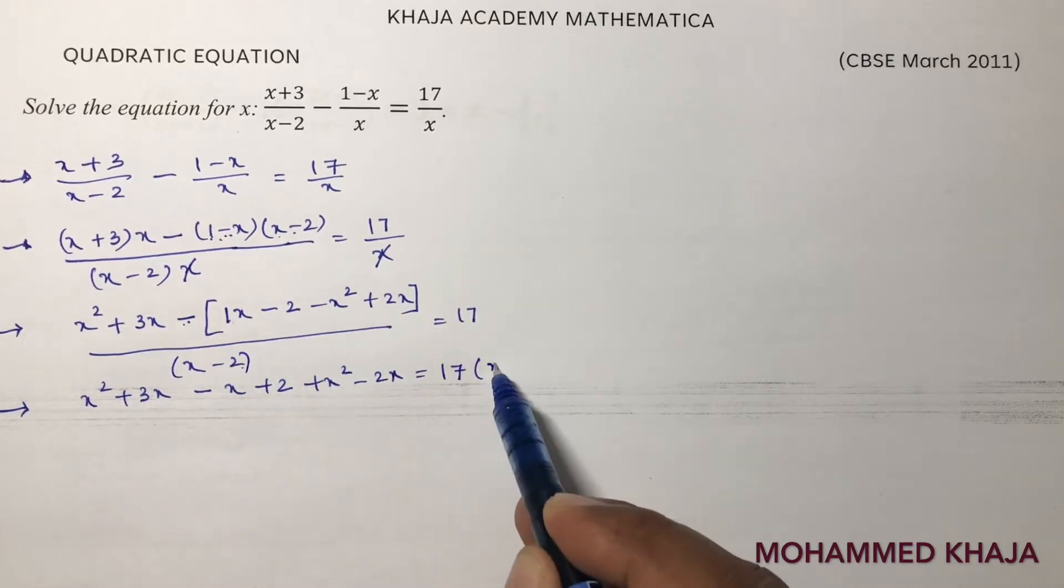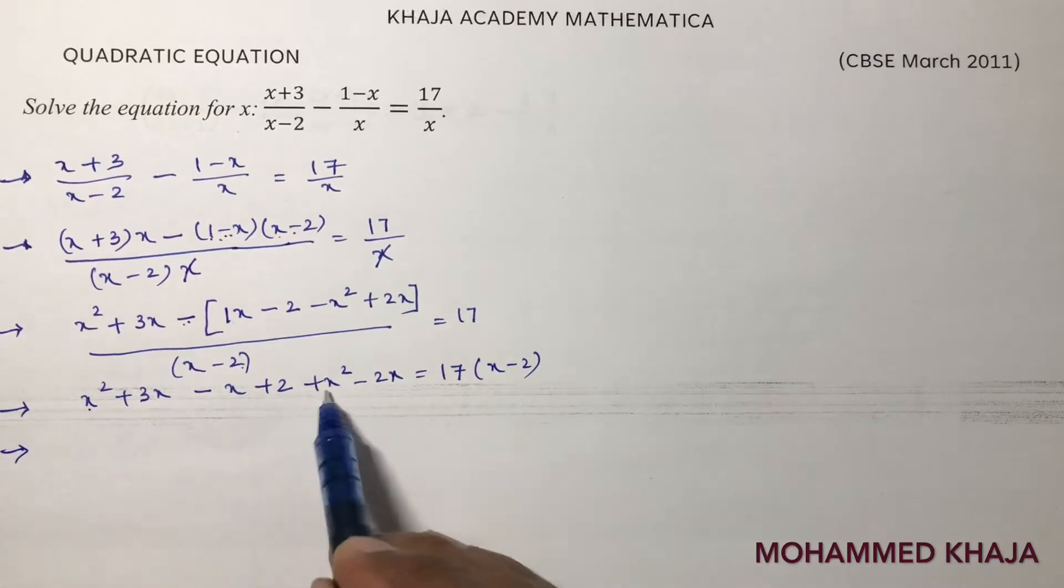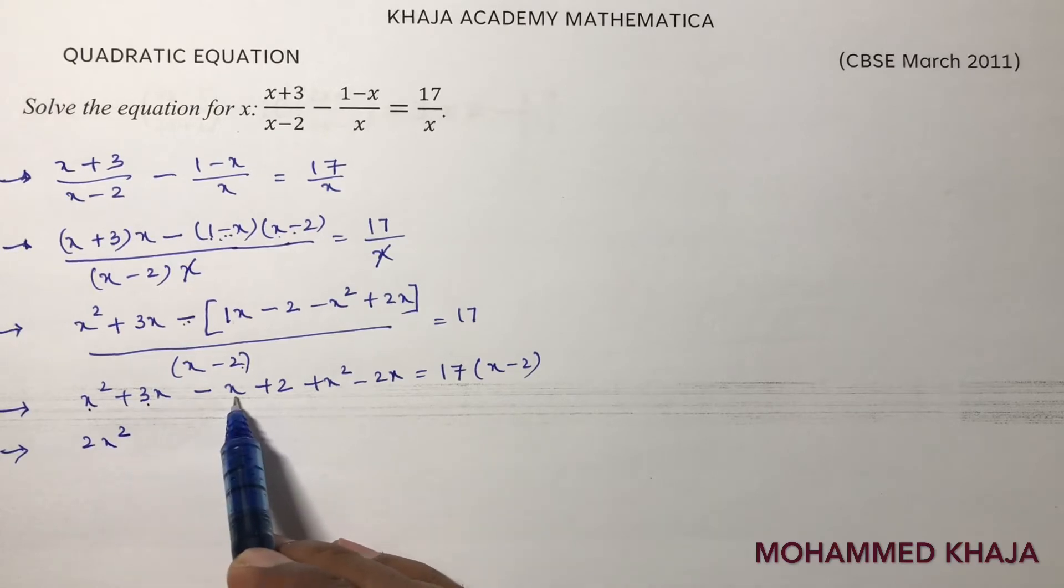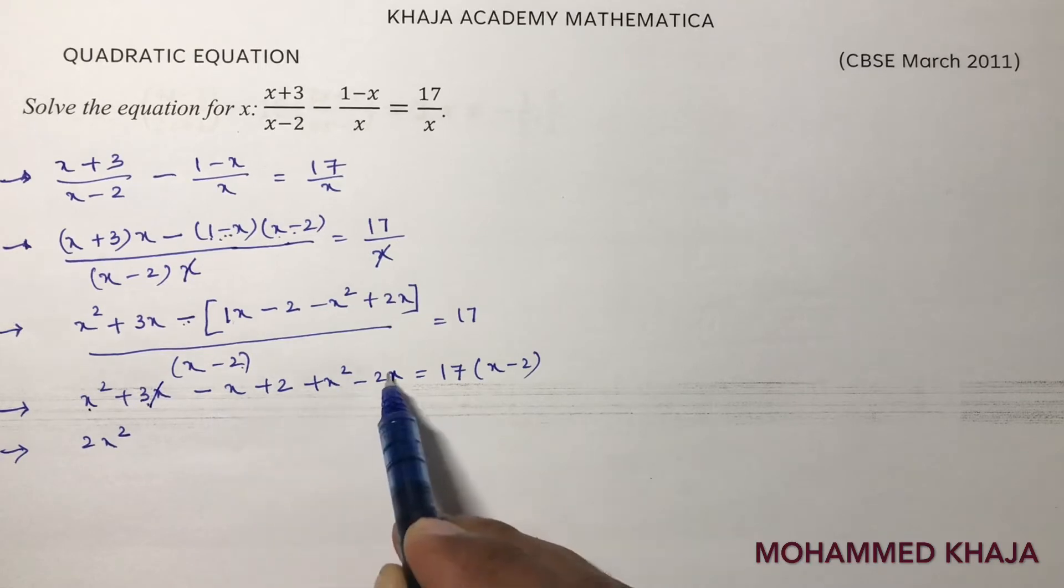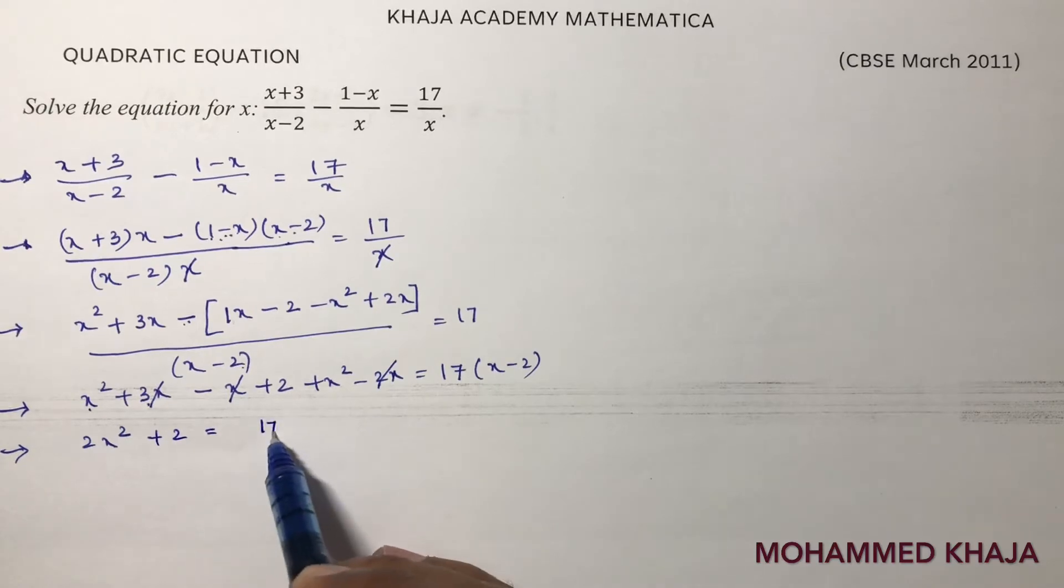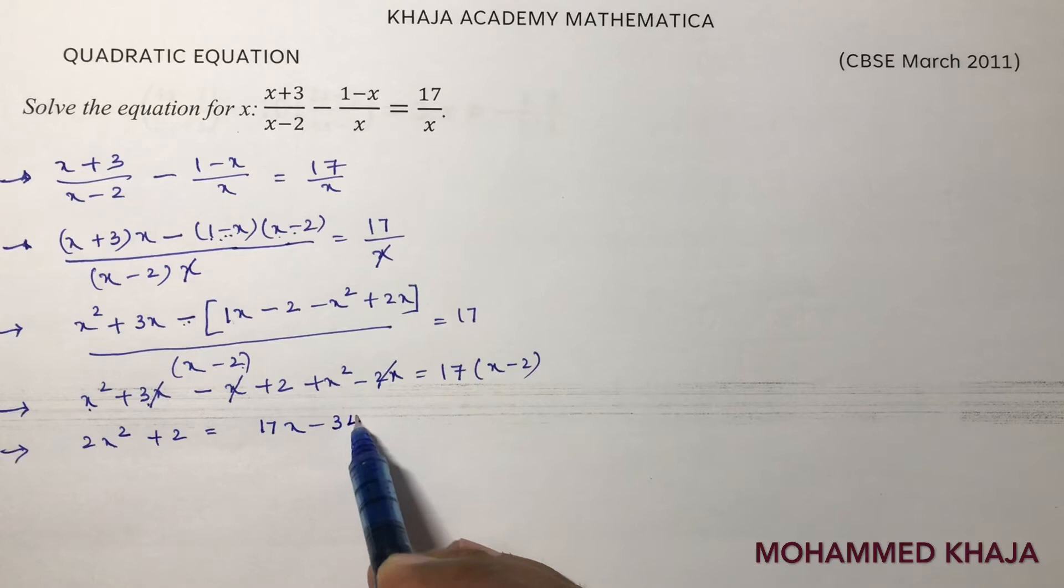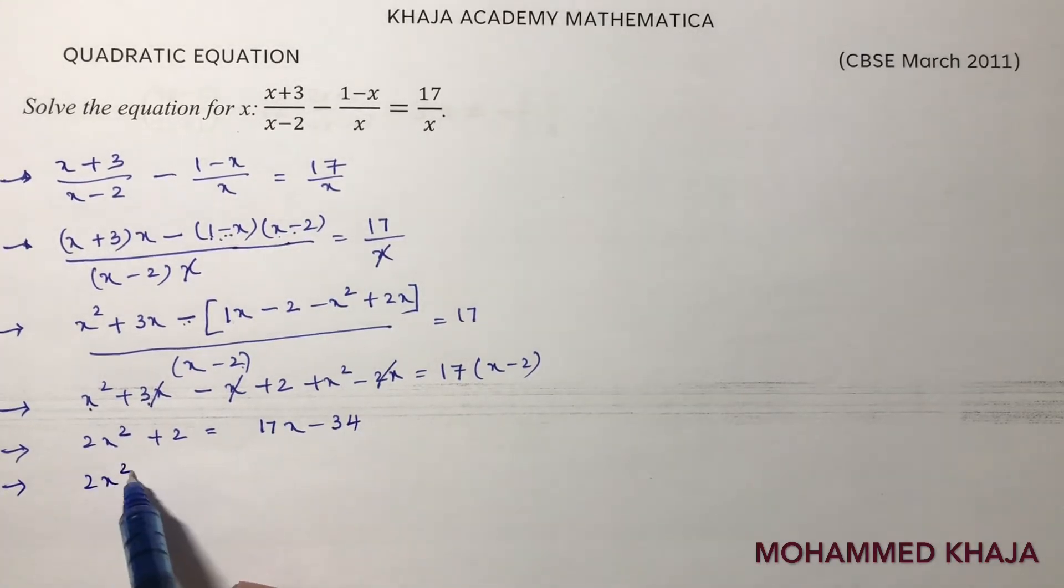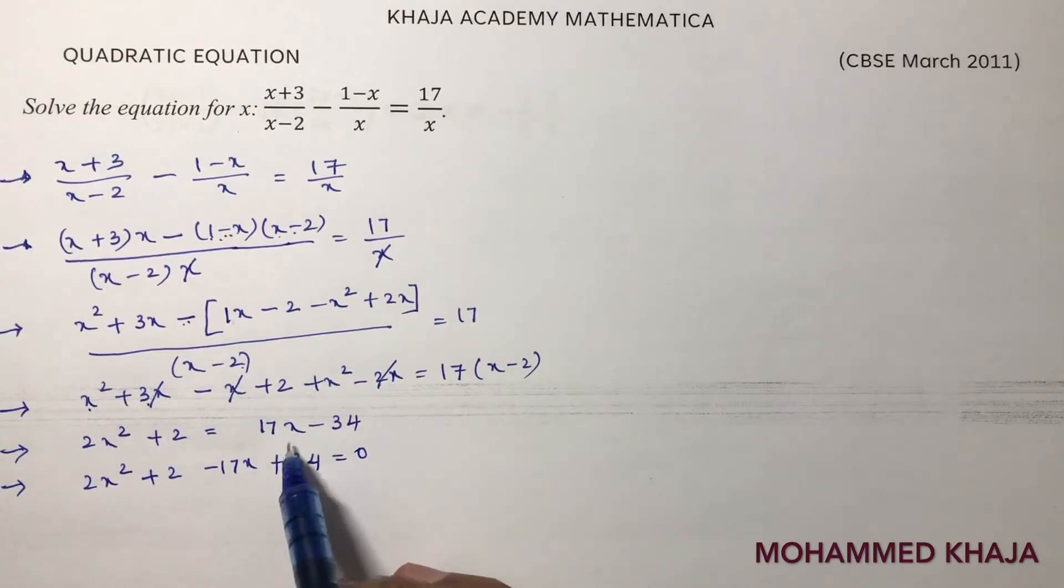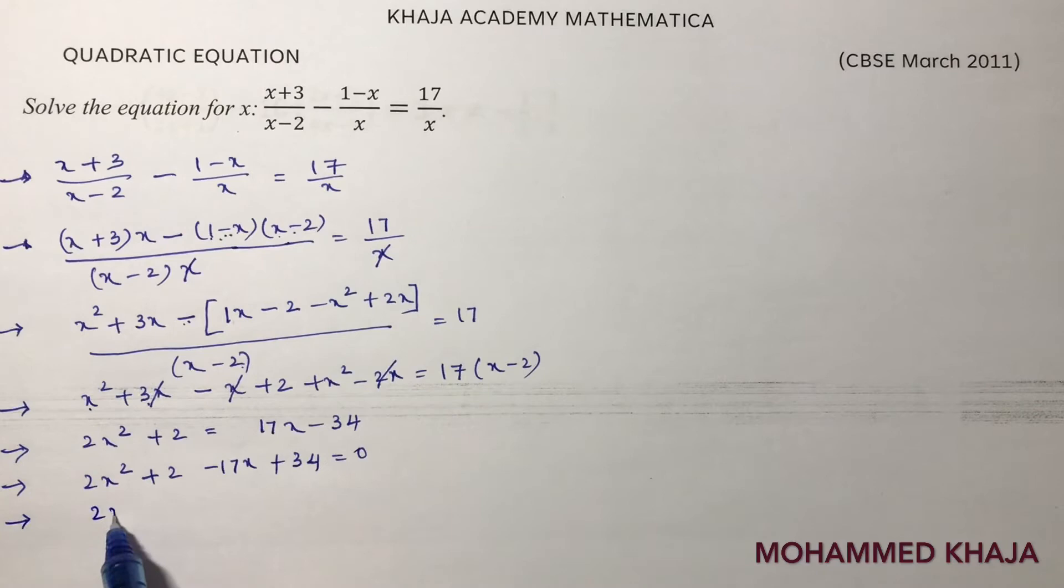This x minus 2 take to origin, into x minus 2. So x square, x square which is 2 x square. 3x minus x minus 2x - see 3x minus x minus 2x is minus 3x will get cancelled. So you are left with x square plus 2 equals 17x minus 17 times 2 is 34. So 2x square plus 2 minus 17x plus 36 equals 0. So 2x square minus 17x plus 36 equals 0.